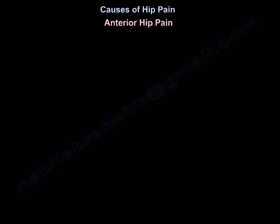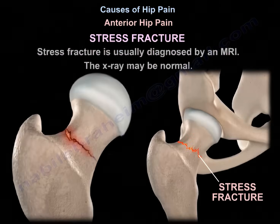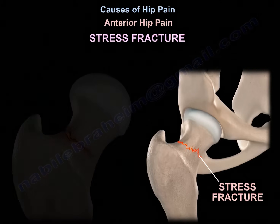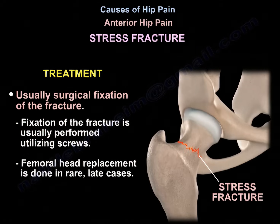Another cause of anterior hip pain is a stress fracture, which is usually diagnosed by MRI — the x-ray may be normal. Early diagnosis is important before the fracture displaces and gives a bad result. Treatment is usually surgery by fixation of the fracture, typically using screws. Femoral head replacement is done in rare late cases.